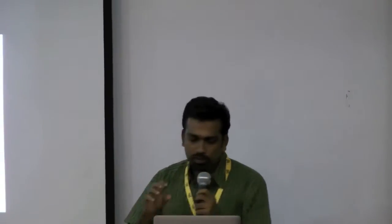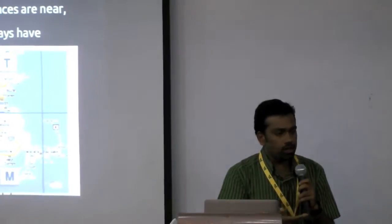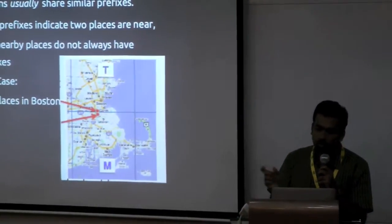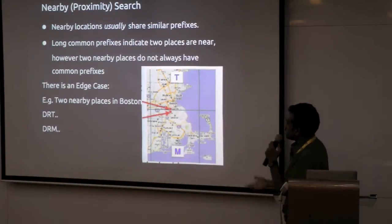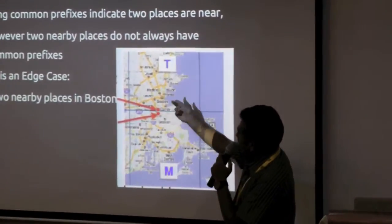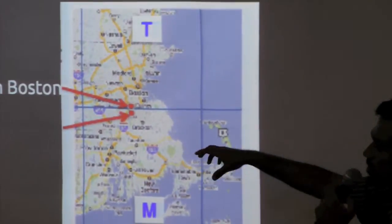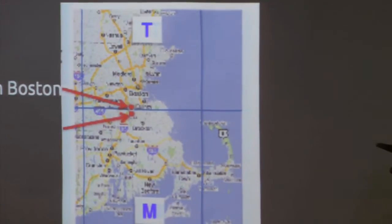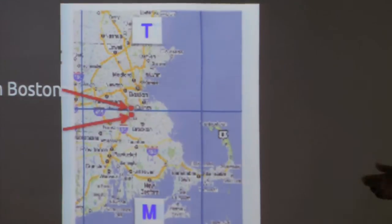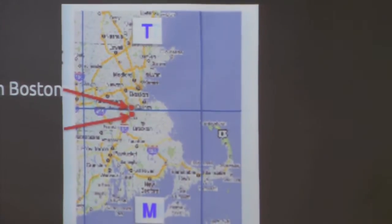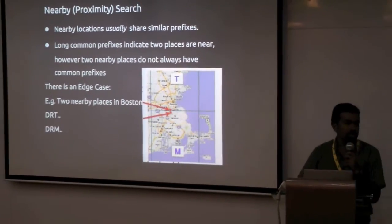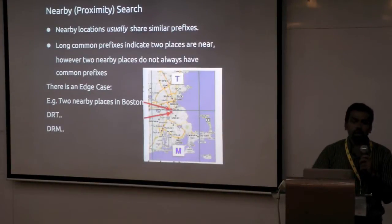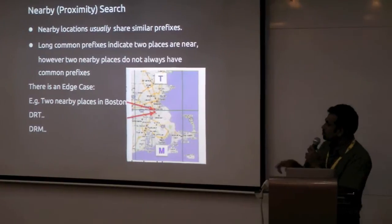Because of the hierarchical structure, nearby searches or proximity searches become very easy, because similar locations usually have similar prefixes — long common prefixes tend to mean two places are near. But there are exceptional edge cases: two places which are very near, like in Boston, may fall into two different buckets at the third level division itself. The code for one starts with DRT and for the other DRM. However, the libraries that allow GeoHashing and provide the ability to search for neighbors and the bounding box do handle these edge cases.